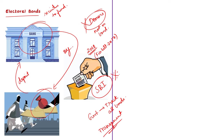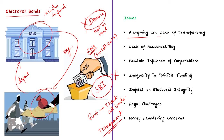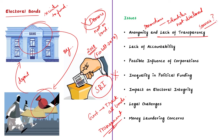With these basics, let us now understand the issues associated with the electoral bond scheme. The first issue is anonymity and lack of transparency. One of the major criticisms is that the scheme allows for anonymous donations to political parties. Donors can purchase these bonds without their identities being disclosed to the public. This lack of transparency raises concerns about the source of political funding and potentially allows black money to enter politics. There is also lack of accountability — the scheme does not require political parties to disclose the identity of donors when they redeem the bonds, making it difficult to track where the money is coming from, potentially leading to corruption and unethical practices.